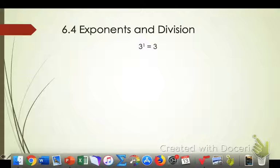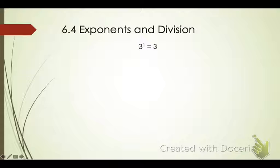Just a couple reminders. 3 to the first power is equal to 3, because that means you have 3 one time. But what if I have 3 to the negative 1 power? Well, that means that I have 1 over 3, or 1 third. So remember that negative 1 power — you put your 3 in the denominator, not in the numerator. So that just means that I have 1 third.